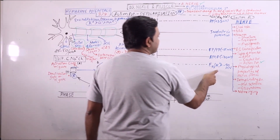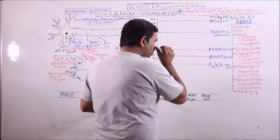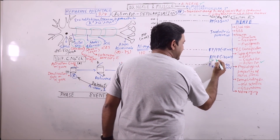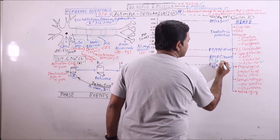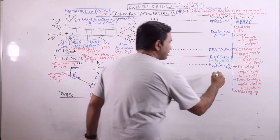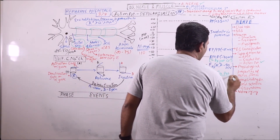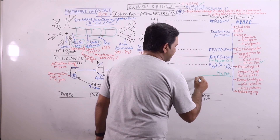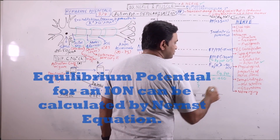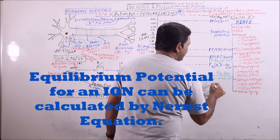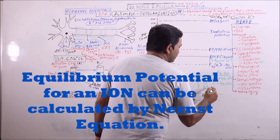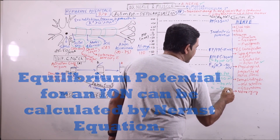It is important to note that the RMP has exactly equal value to the equilibrium potential of chloride ions, which is minus 70 millivolts. So if the equilibrium potentials of ions are calculated: sodium is plus 60 millivolts, chloride is minus 70 millivolts — which overlaps the resting membrane potential — and potassium is minus 90 millivolts.